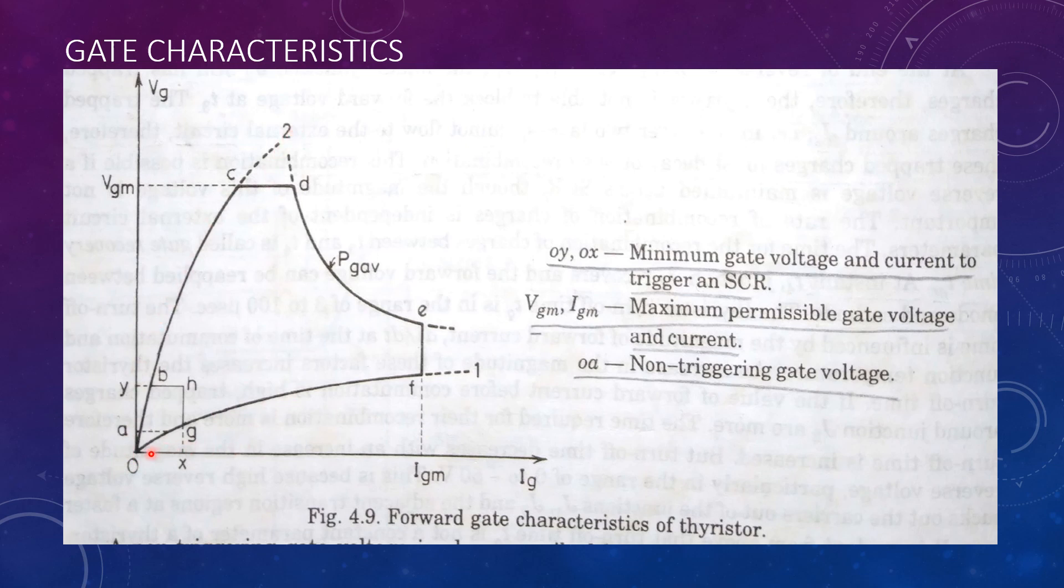The spread of the characteristics between curve 1 and curve 2 is due to the inadvertent difference of the doping levels between individual thyristors.